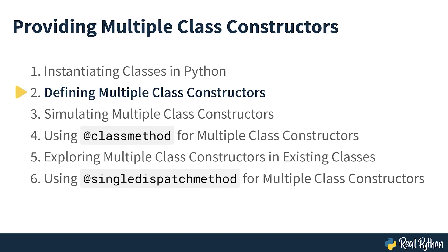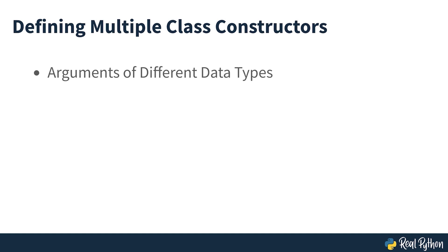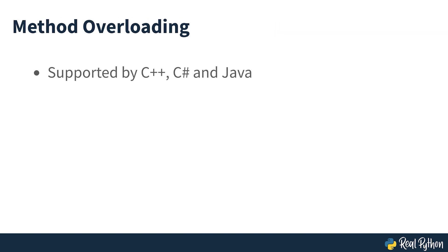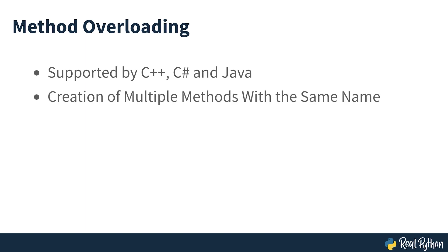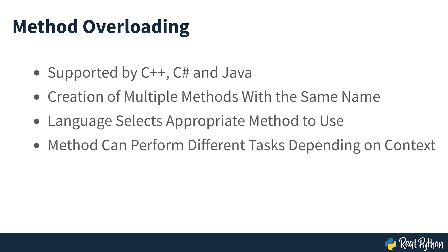Defining multiple class constructors. Sometimes you'd like to write a class that allows you to construct objects using arguments of different data types, or even a different number of arguments. Some programming languages such as C++, C#, and Java support what is known as function or method overloading. This feature enables you to create multiple functions or methods with the same name and different implementations, allowing the language to select the appropriate implementation to run depending on how you call the method.